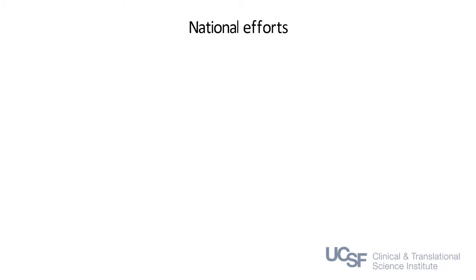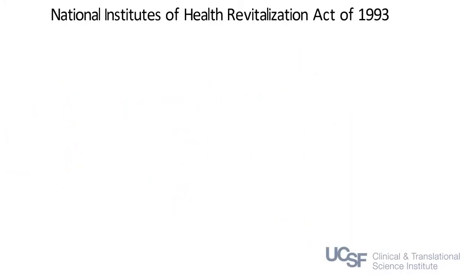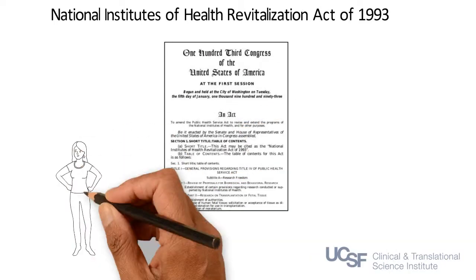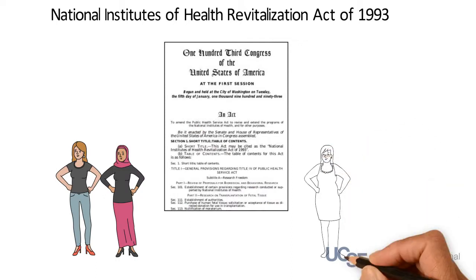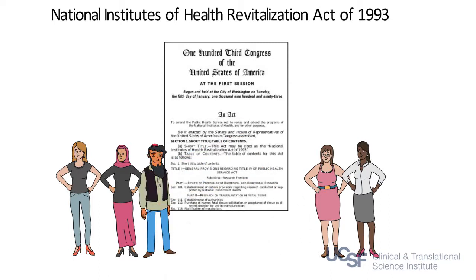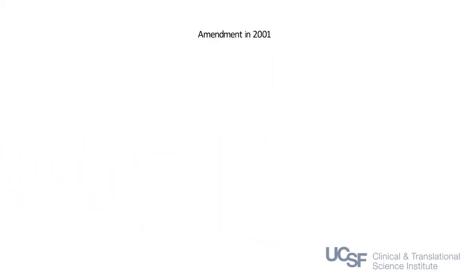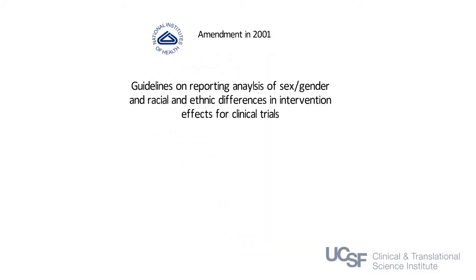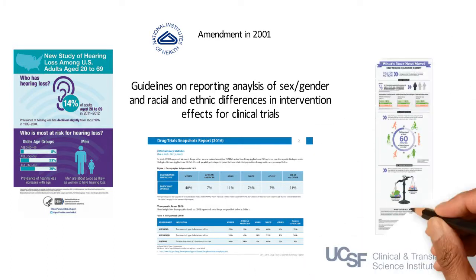The NIH took a first step in addressing these disparities with the Revitalization Act of 1993, which mandated the inclusion of women and minorities in NIH-sponsored research for the first time. The new Act required researchers to include women and minorities to provide valid analysis if variables studied in the trial affect women or minorities differently than other subjects in trials. The Act was amended in 2001 to include guidelines on reporting analysis of sex, gender, racial and ethnic differences and intervention effects for clinical trials.